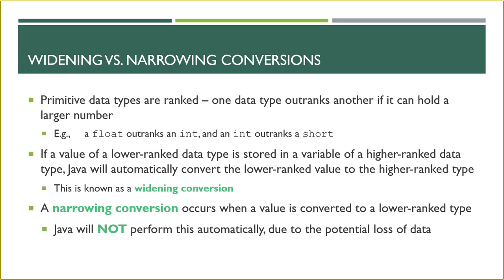We have a concept called widening and narrowing conversions. Primitive data types are ranked — a data type will outrank another if it can hold a larger number. A float would outrank an integer because floats can store larger values than ints. An int would outrank a byte because ints can store larger values than bytes. If we try to store a value of a lower-ranked data type into a variable of a higher-ranked data type, that's fine — Java will do that for us.